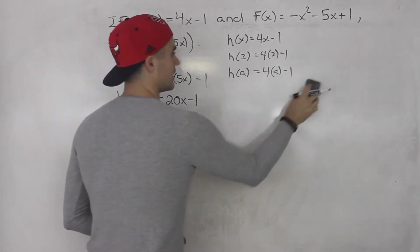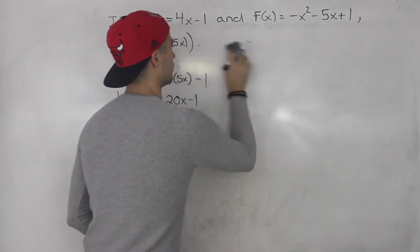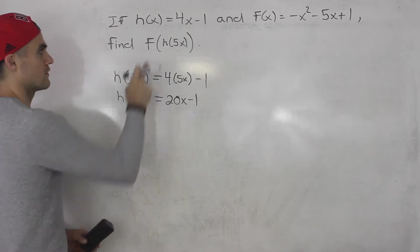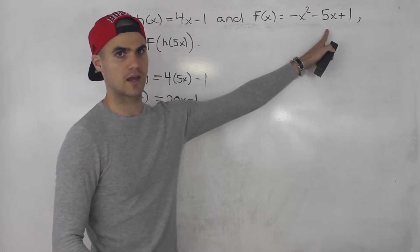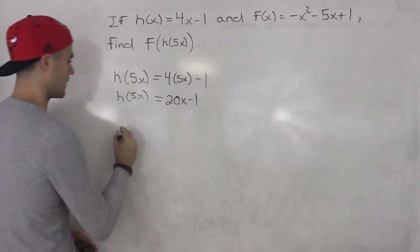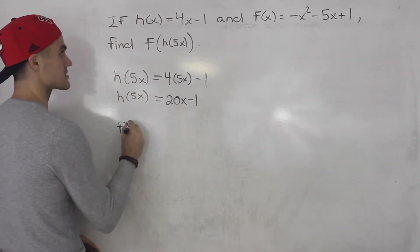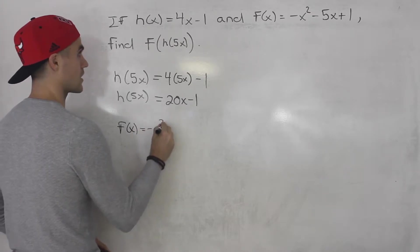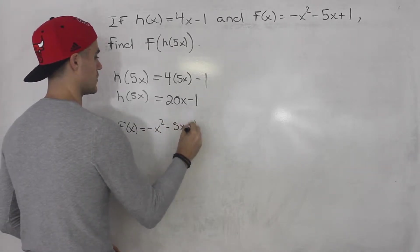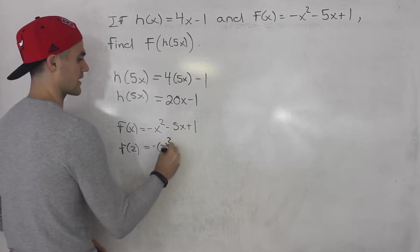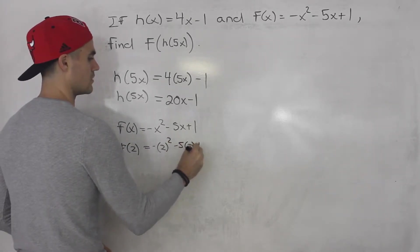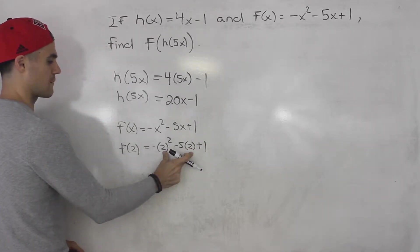So now we can find what f(h(5x)) is. Basically, we're going to take this and we're going to plug it in for all the x values in f of x. So the way that works, if we have f(x) is -x² - 5x + 1, what's f(2)? Well, we're plugging in 2 for all the x values. So basically, we plug in for that bracket.